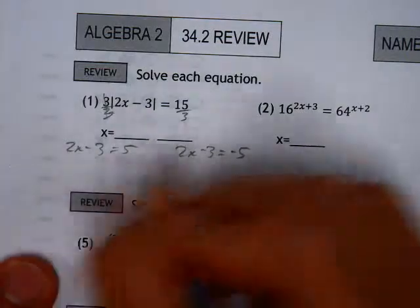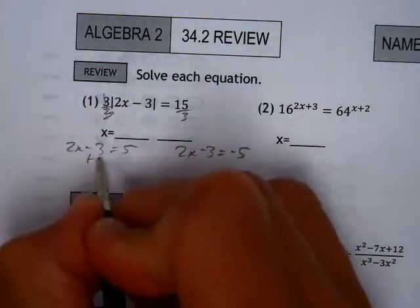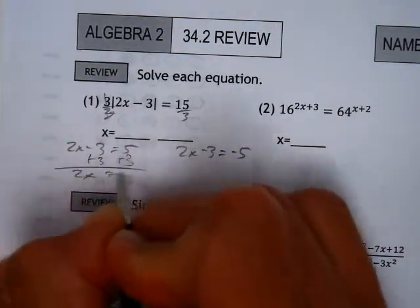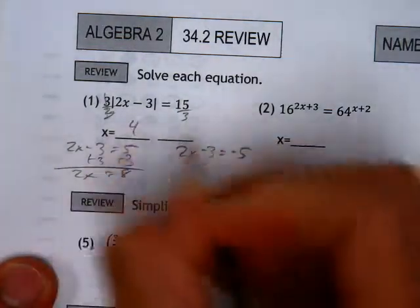Oh yeah. So now, two separate problems, solve them twice, you should be good to go. Add 3, 2x equals 8, divide by 2, you get x equals 4.